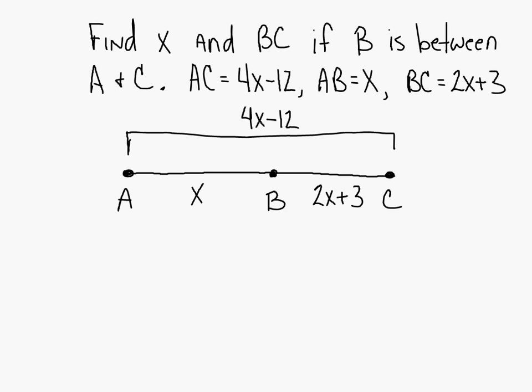The two small pieces added together equal the big piece, don't they? So your setup is going to be x plus 2x plus 3 equals 4x minus 12. And on this left-hand side, you have to combine like terms. What's x plus 2x? Good. 3x plus 3 equals 4x minus 12.